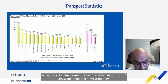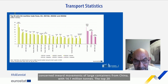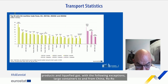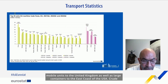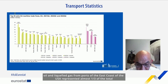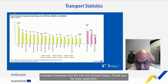In the fourth quarter of 2022, the main maritime trade flow concerned inward movements of large containers from China with 14.1 million tons. The top 20 trade flows were largely dominated by inward movements of liquid bulk goods — crude oil, oil products and liquefied gas. Thank you for your attention.